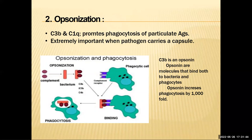Another role is opsonization. These proteins promote phagocytosis of particulate antigens, which is especially important when the pathogen carries a capsule. The complement binds to the bacterium, tagging it for destruction by phagocytic cells. The phagocytic cell has a complement receptor that binds specifically to these tagged bacteria, and phagocytosis then occurs within a vesicle. Destruction occurs within the vesicle through lysosomal enzymes that break down the bacterial membrane and proteins.